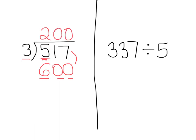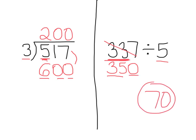Now let's try the one on the right: 337 divided by 5. Does 5 divide into 3? No. Does 5 divide into 33? Yes. So I need to think of my compatible number. What is close to 33 that 5 will divide into? 35. So I'm going to change 337 to 350. Because 350 is pretty close to 337, and now I'm able to solve it in my head — no long division needed. Here's my basic fact: 35 divided by 5 is 7. Then I add a 0, and I get 70 for my estimate.